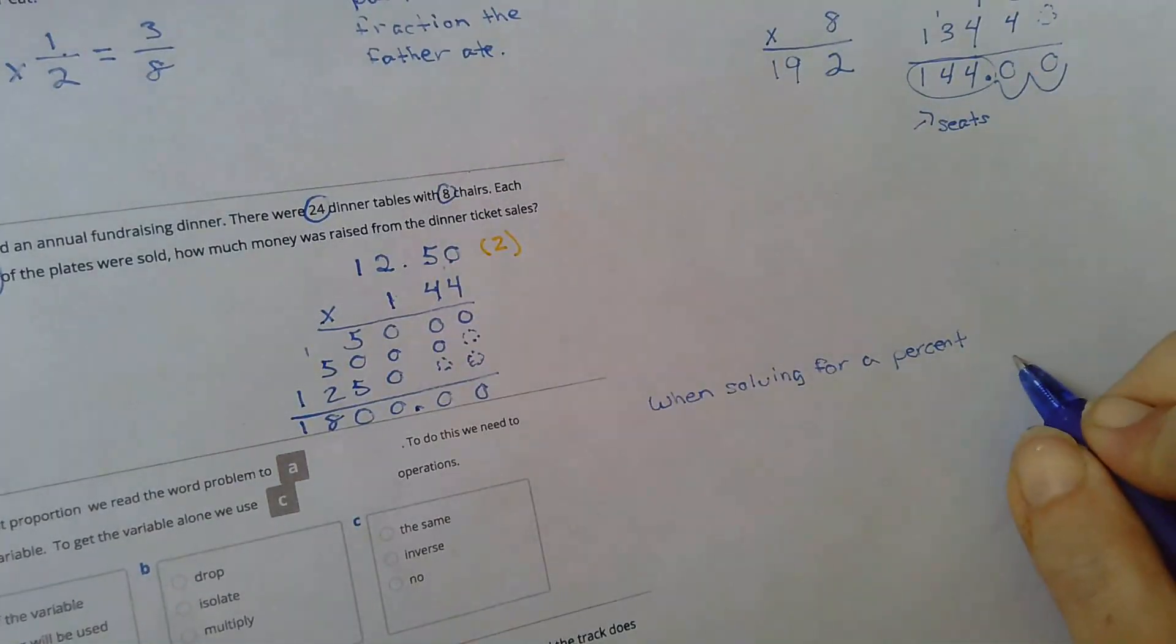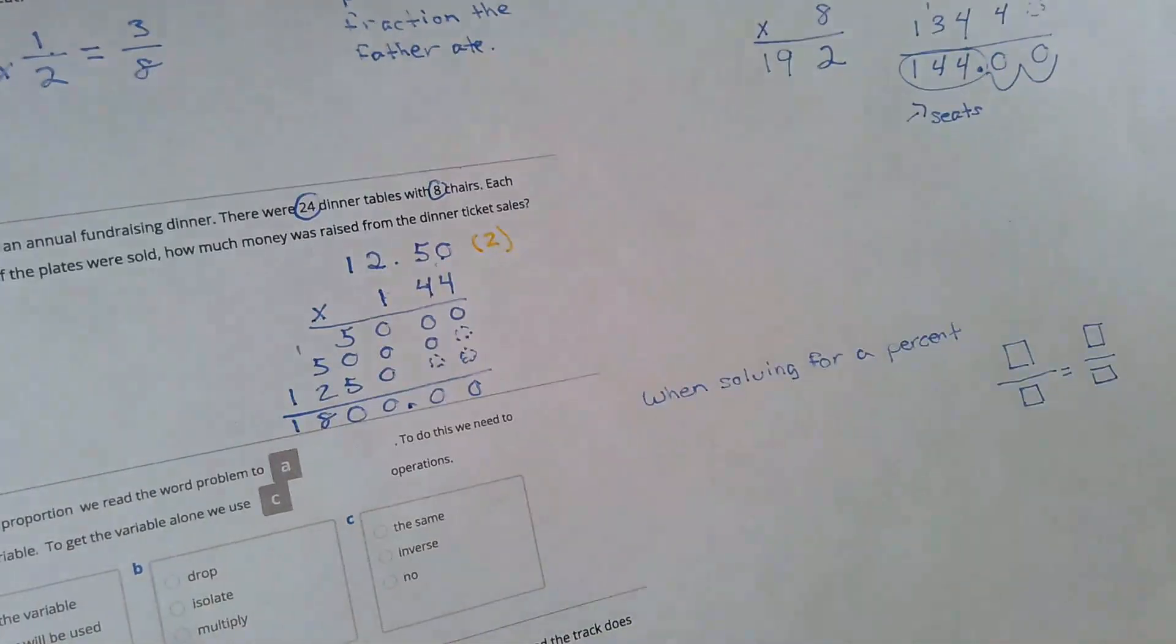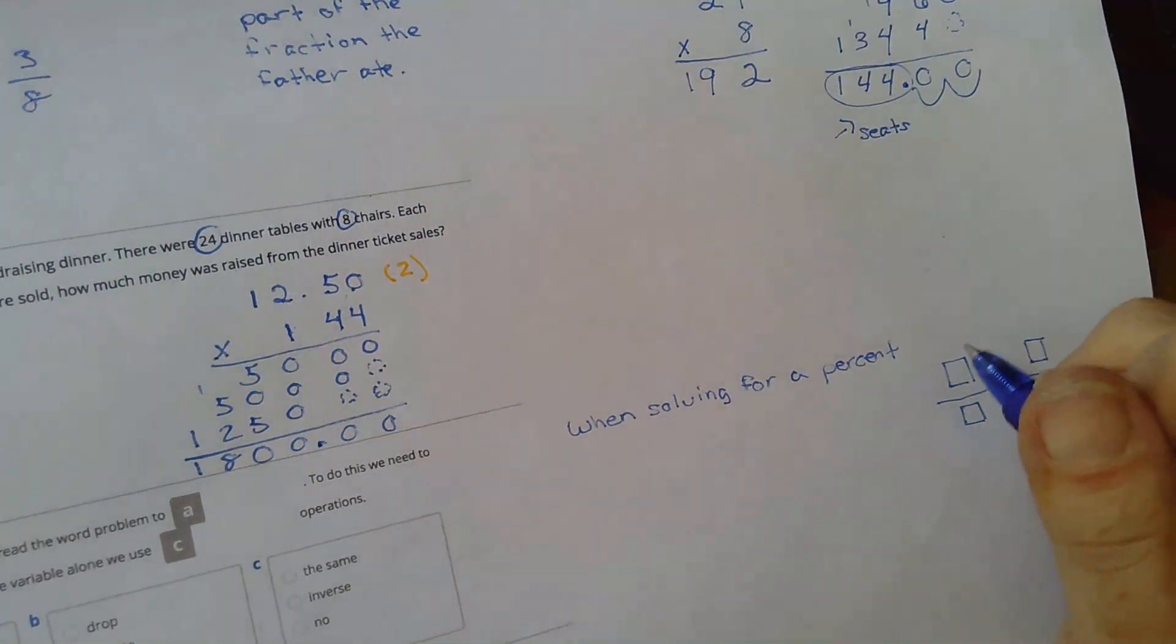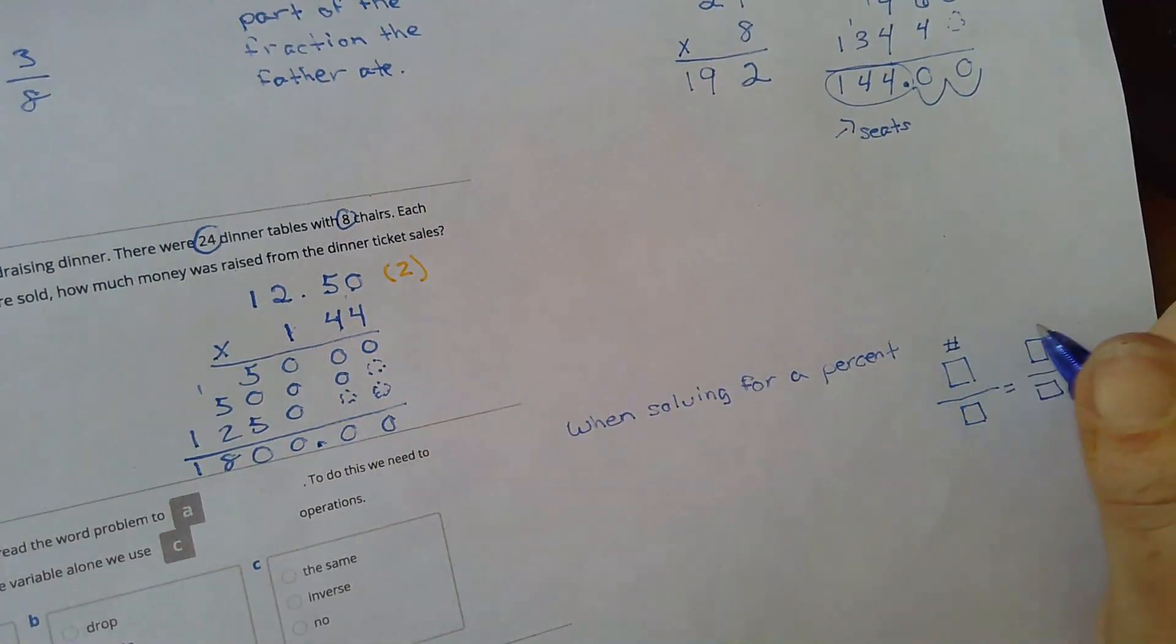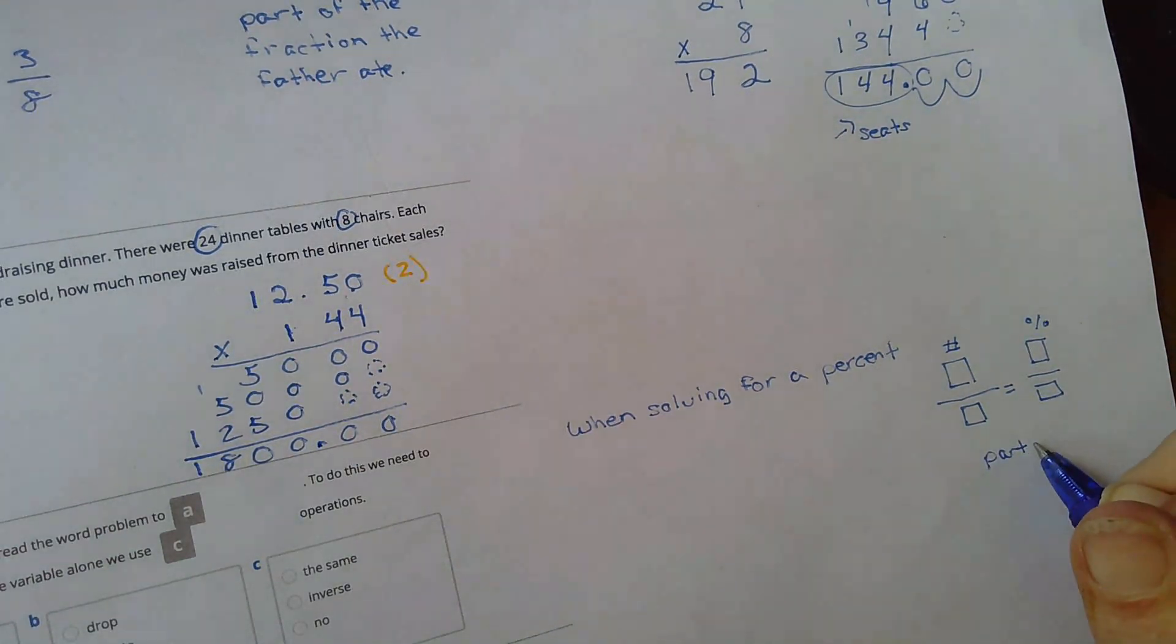Now, this is one of those questions that we used the boxes for, right? So this is the one that, this was our number, and this was the percent side, and it would either give us the part in the whole, and we were solving for percent, okay?